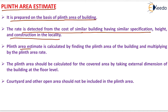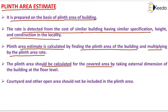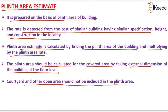The plinth area estimate is calculated by finding the plinth area of the building and multiplying it by the plinth area rate. The plinth area should be calculated for the covered area by taking the external dimensions of the building at the floor level only. Courtyards and other open areas should not be included in the plinth area.